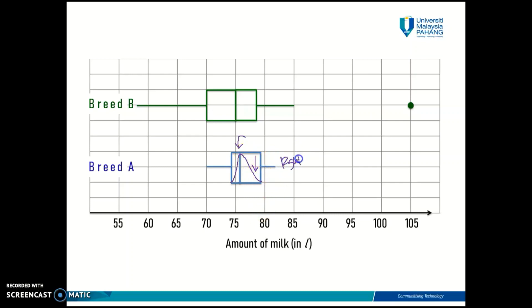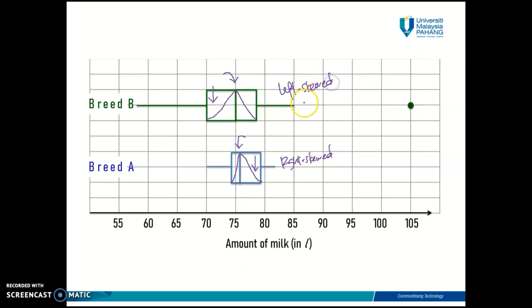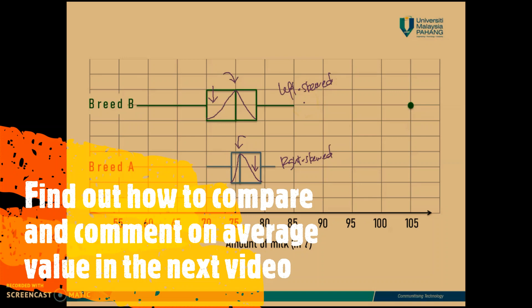Since the median line is closer to the left side, breed A has a right skewed distribution. And there you go — you can easily determine the shape of your distribution just by looking at your box plot.